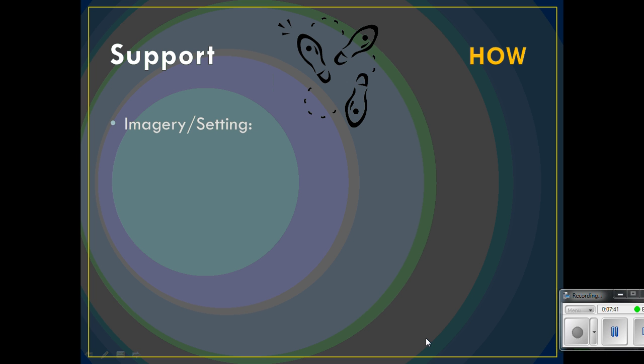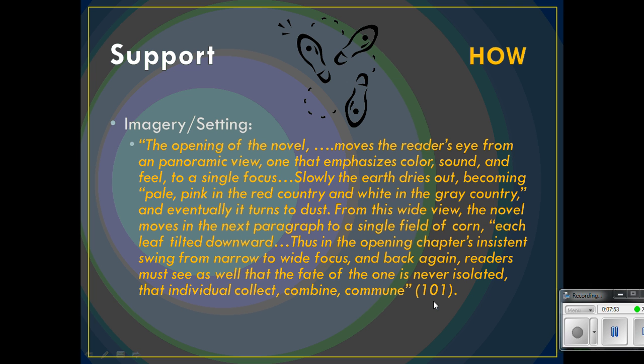Another element of support that authors use is imagery, and we have imagery and setting both here — I've combined these because they were a nice combination. This is a larger excerpt from page 101 of the piece. The ellipses indicate that I've taken out a chunk of the text for brevity. The opening of the novel, she states, moves the reader's eye from a panoramic view, one that emphasizes color, sound, and feel, to a single focus — and that's her claim.